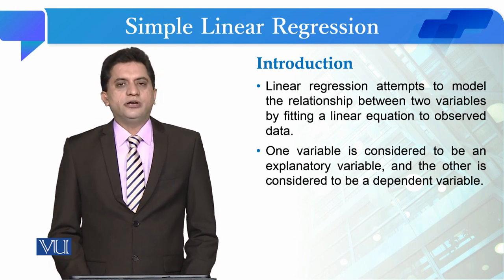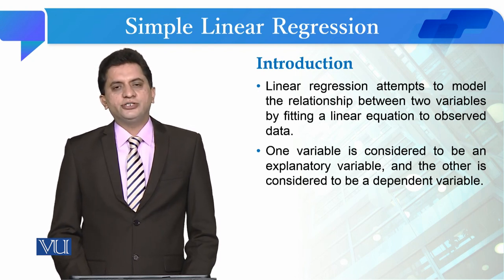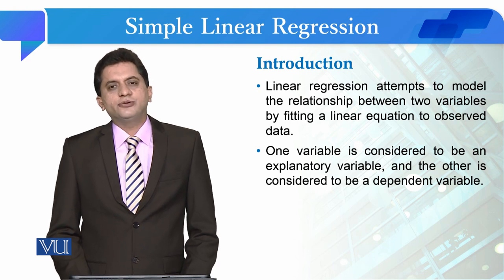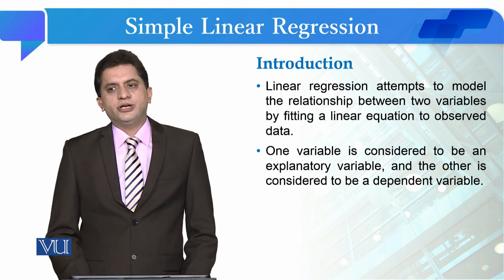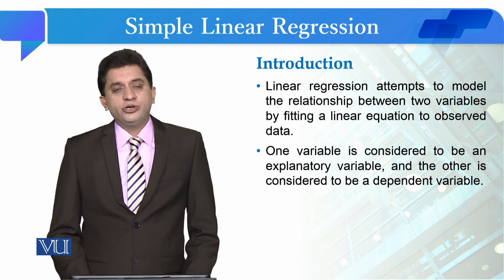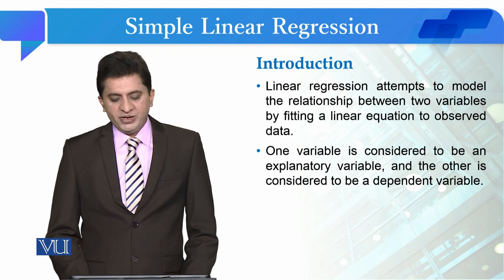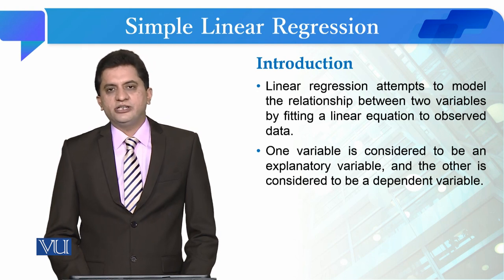We discussed in the correlation test as well that relationships can be of different types — they can be linear, exponential, and curvilinear. In linear regression, one variable is considered to be an explanatory variable and the other is considered to be a dependent variable.